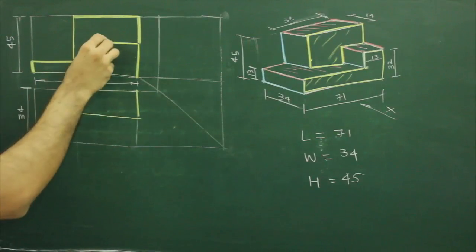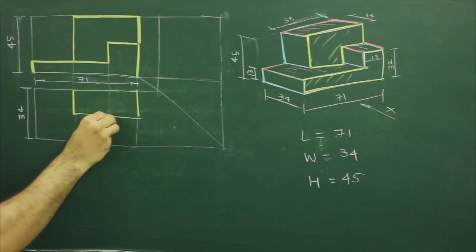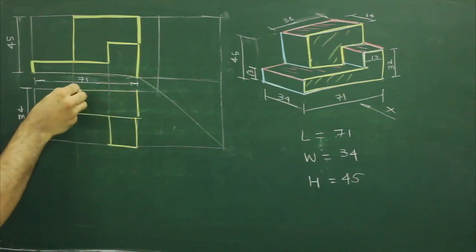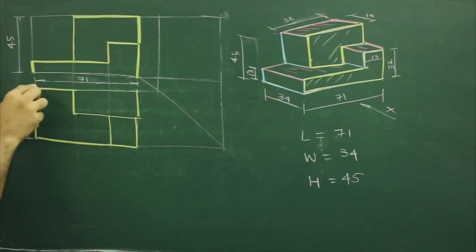Now to draw next block, we can project from front view. So we will get second block as well. After that, third block. So third block is complete. So we can darken this portion. So we are done with top view as well.